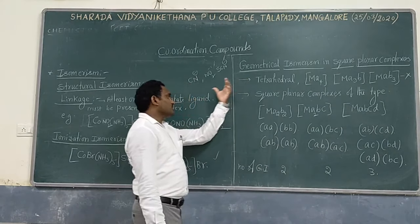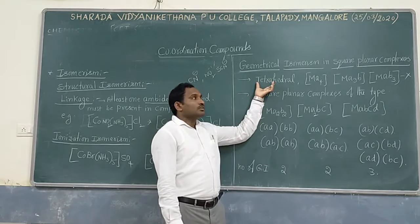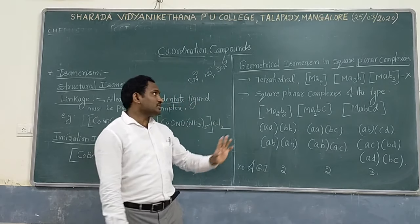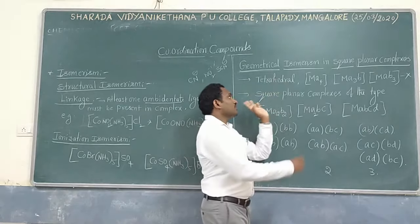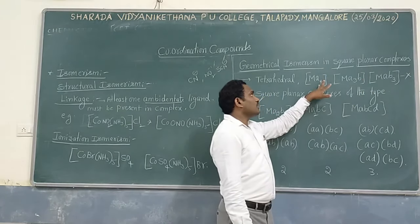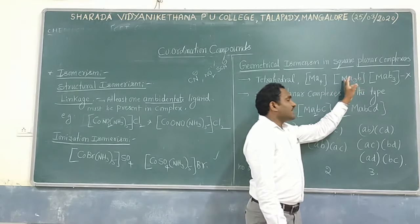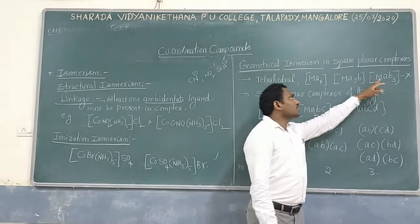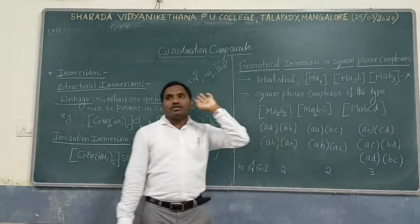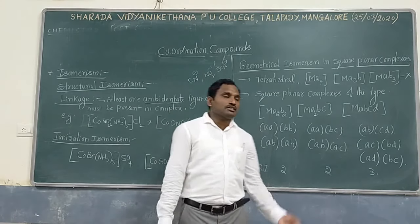Next: geometrical isomerism. Geometrical isomerism is not observed in tetrahedral complexes — meaning tetrahedral complexes do not show geometrical isomerism. The reason is that however you arrange the ligands, you get a symmetrical arrangement. For MA4, MA3B, and MAB3 — where all four or three ligands are same — geometrical isomerism is not possible; you can't arrange them in a different manner. By using this statement, we can answer questions like 'among the following, which does not exhibit geometrical isomerism.'